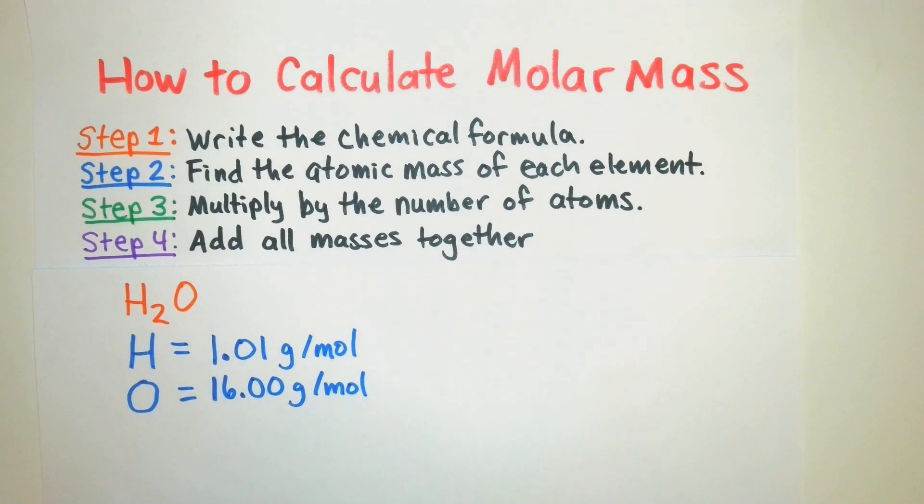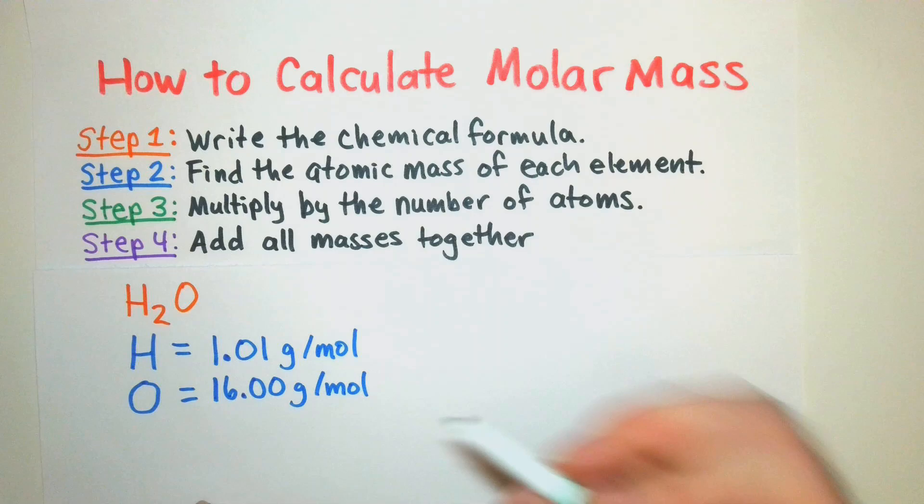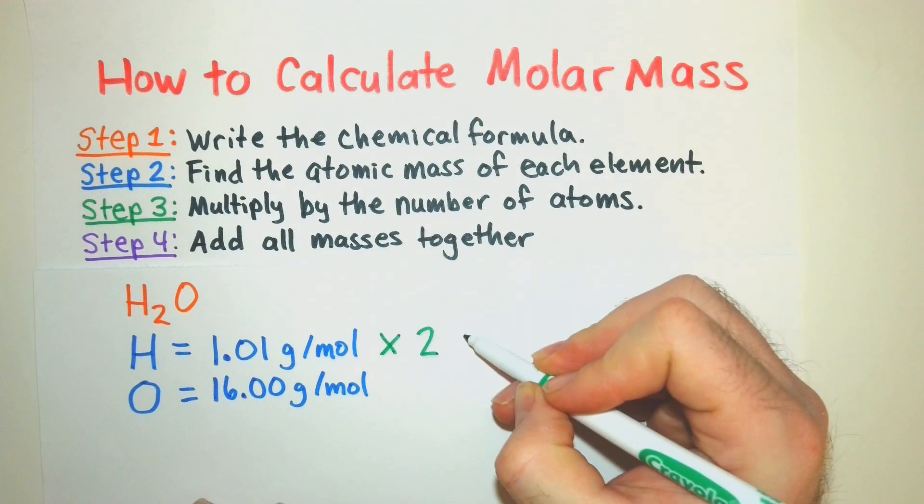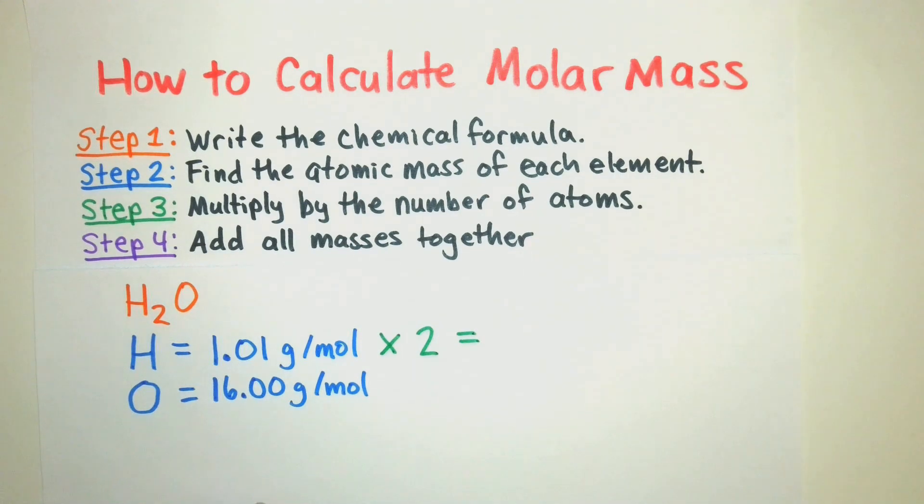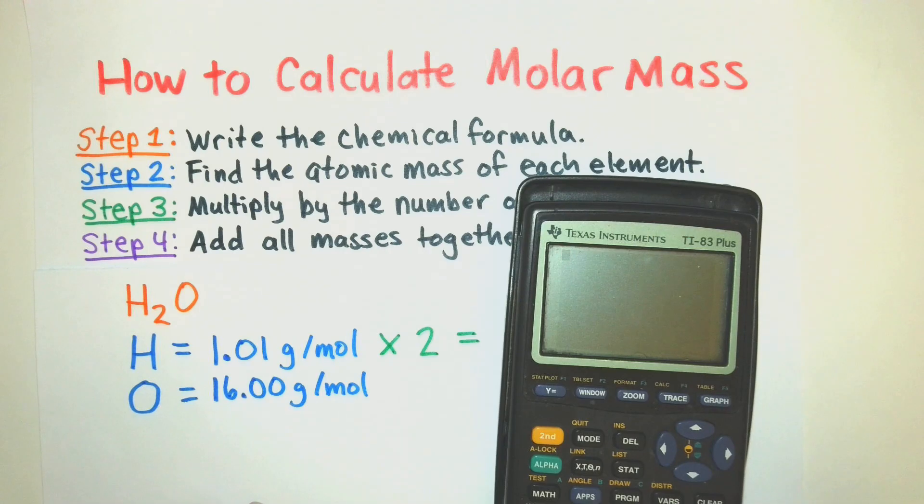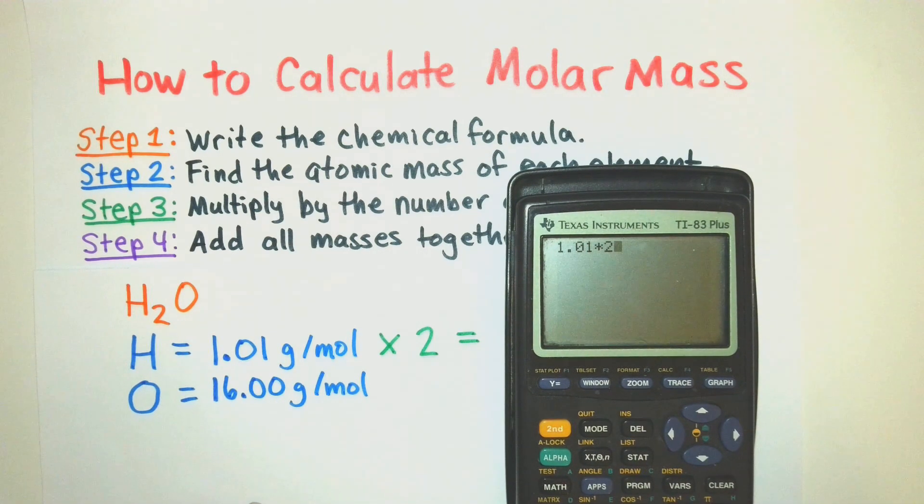Alright, now that I've written that down, I'm going to go to step three. And that's multiply by the number of atoms in that chemical formula. For hydrogen, we have a subscript of two here. So that means there's two atoms. So I'm going to multiply 1.01 times two. This is a simple calculation. I still recommend always putting your calculations into the calculator because we don't want to make simple mistakes that end up with big problems. Alright, so 2.02.